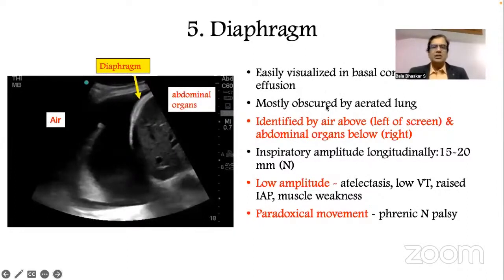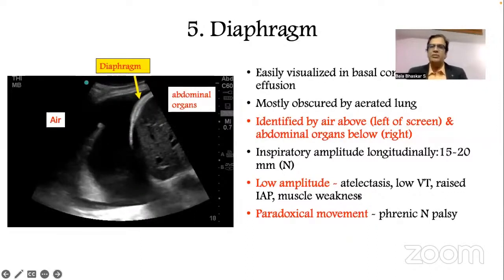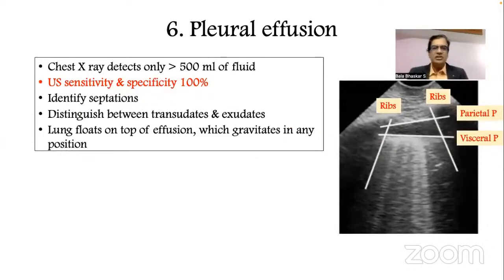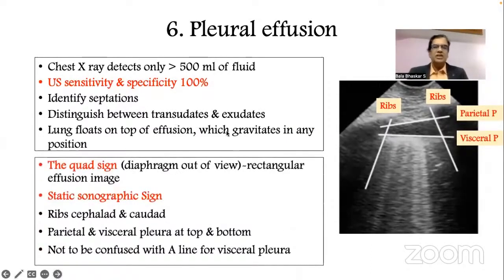Diaphragm assessment is an important part of lung ultrasound — it is easily visualized. On the right side it is identified by liver; on the left by the air above and abdominal organs. Movement amplitude can be measured: low amplitude indicates atelectasis, low tidal volume, or muscle weakness. Paradoxical movement indicates phrenic nerve palsy, which is important when discussing chest nerve blocks. For pleural effusion, ultrasound detects volumes below 500 mL that X-ray would miss. Ultrasound has almost 100% specificity for pleural effusion detection.